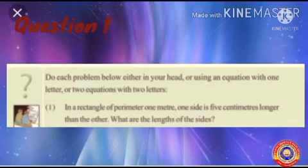Do each problem below either in your head or using an equation with one letter or two equations with two letters. Question number 1: In a rectangle of perimeter 1 meter, one side is 5 cm longer than the other. What are the lengths of the sides? Here the question says that the perimeter of a rectangle is 1 meter and one side is 5 cm longer than the other sides. Then we have to find the length and breadth of the rectangle.